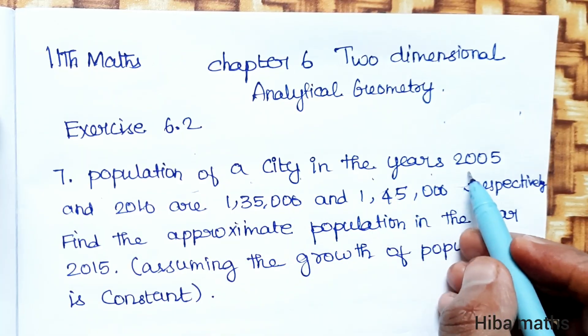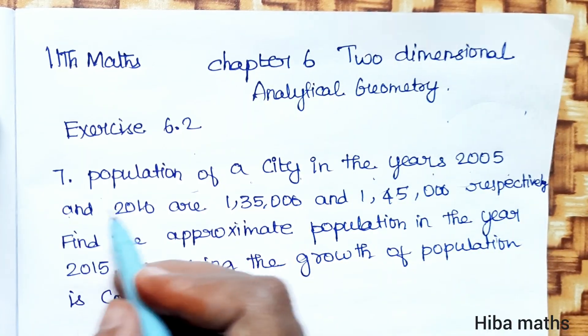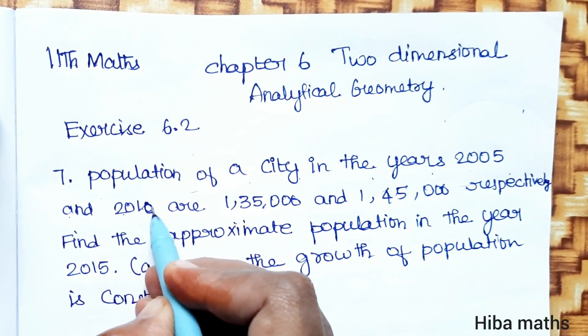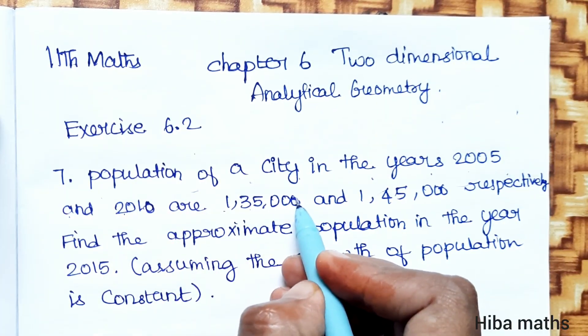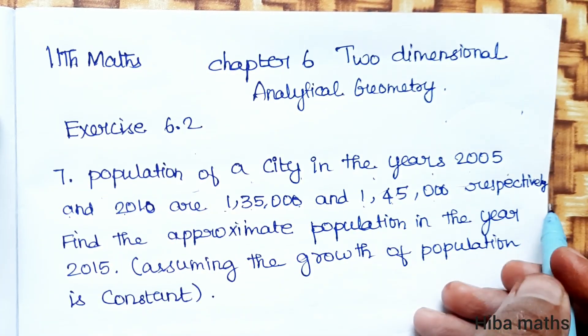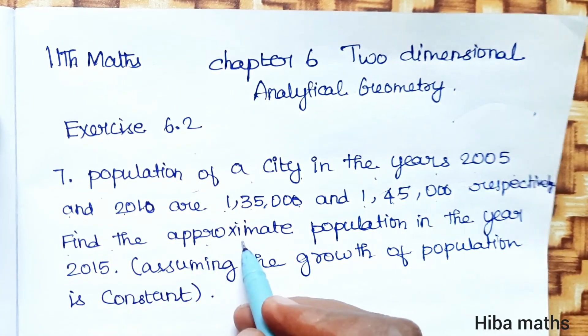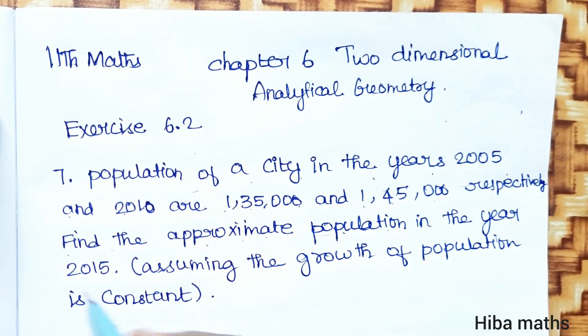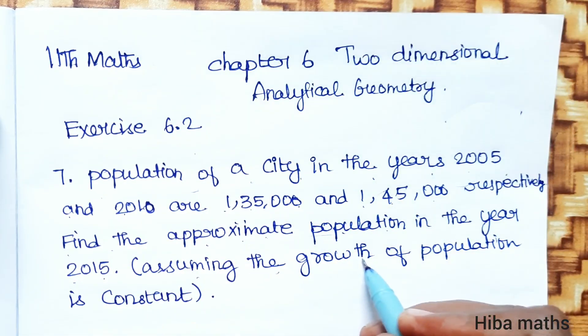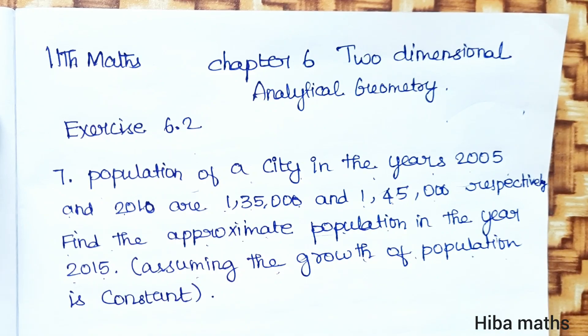Population of a city in the years 2005 and 2010 are 1,35,000 and 1,45,000 respectively. Find the approximate population in the year 2015, assuming the growth of population is constant.